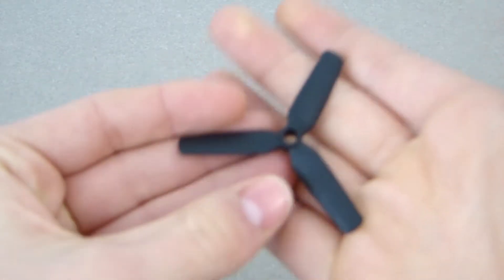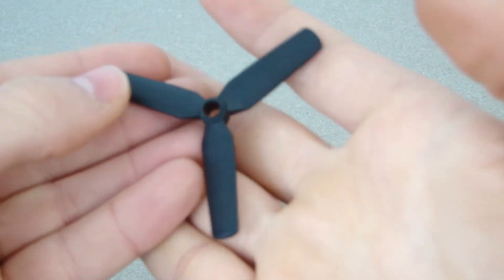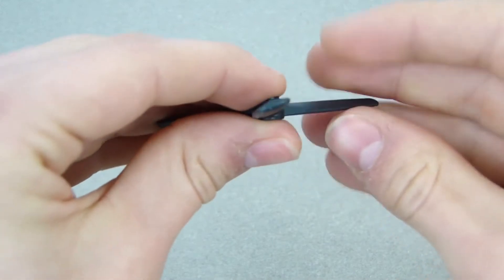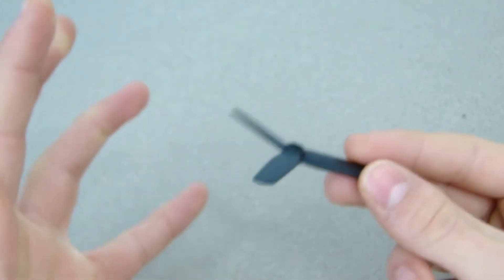So this is a propeller right here. You've probably seen it before. But if you haven't, it just looks like this. But the propellers are actually angled. You can kind of see right there, which makes it so it will be able to fly.